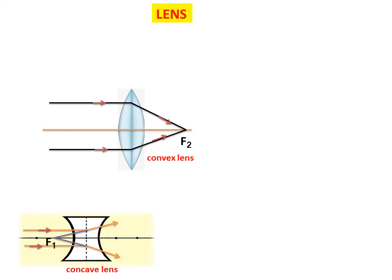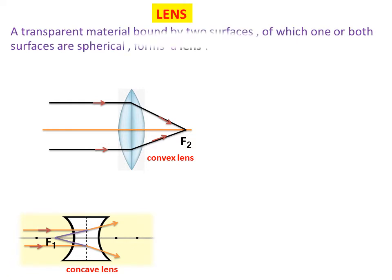Today we will learn about lens and definitions related to lens. A transparent material bound by two surfaces, of which one or both surfaces are spherical, forms a lens.